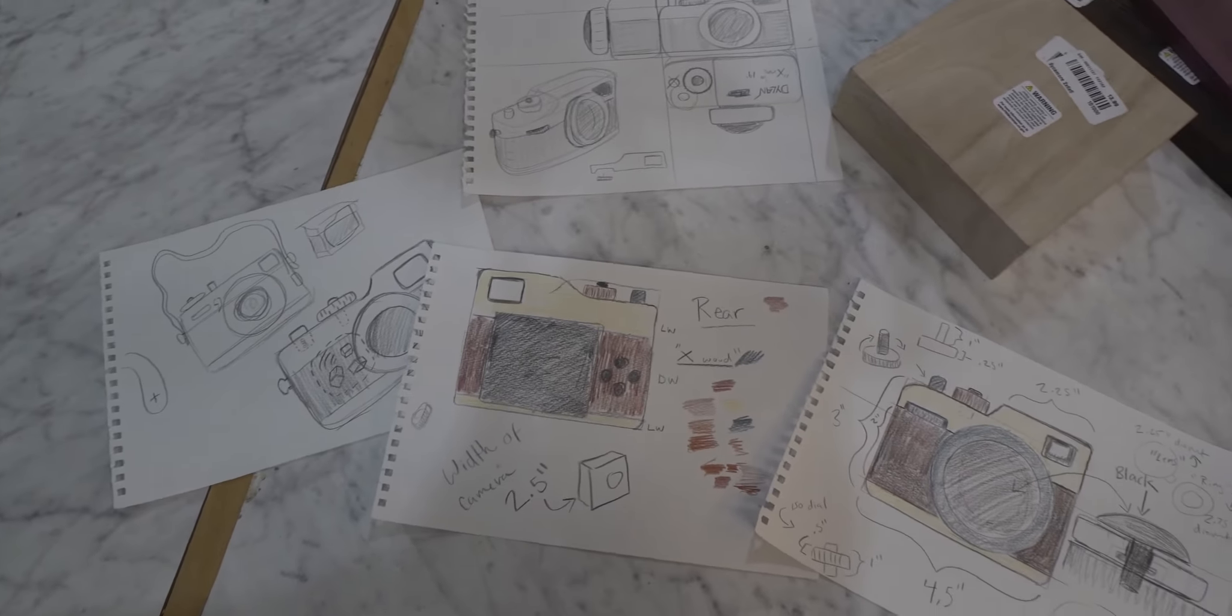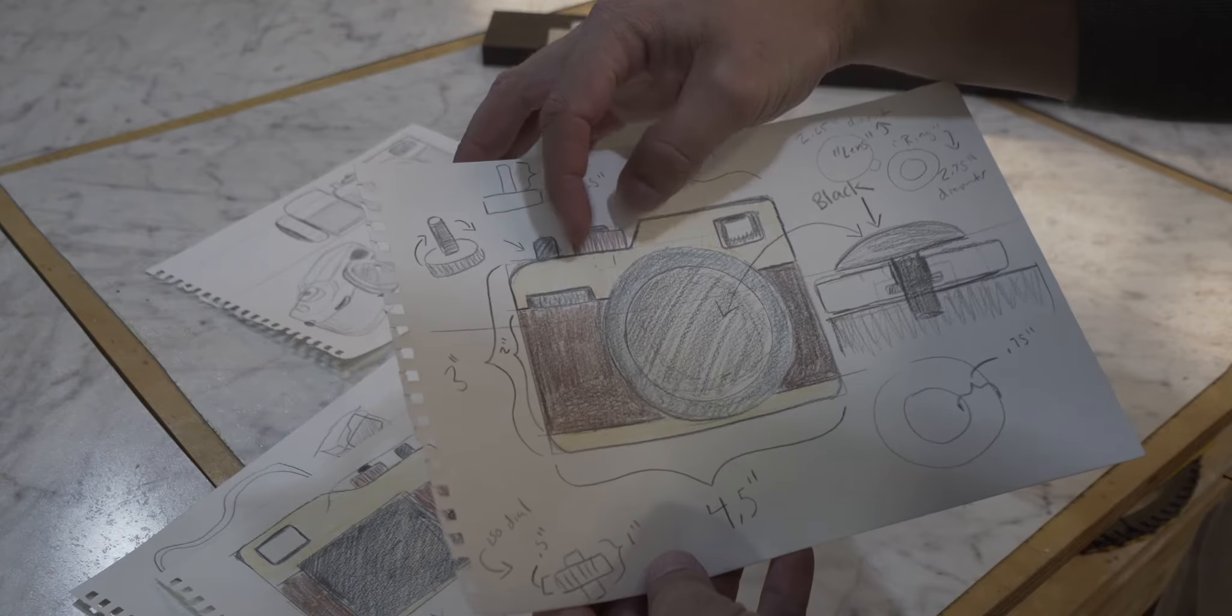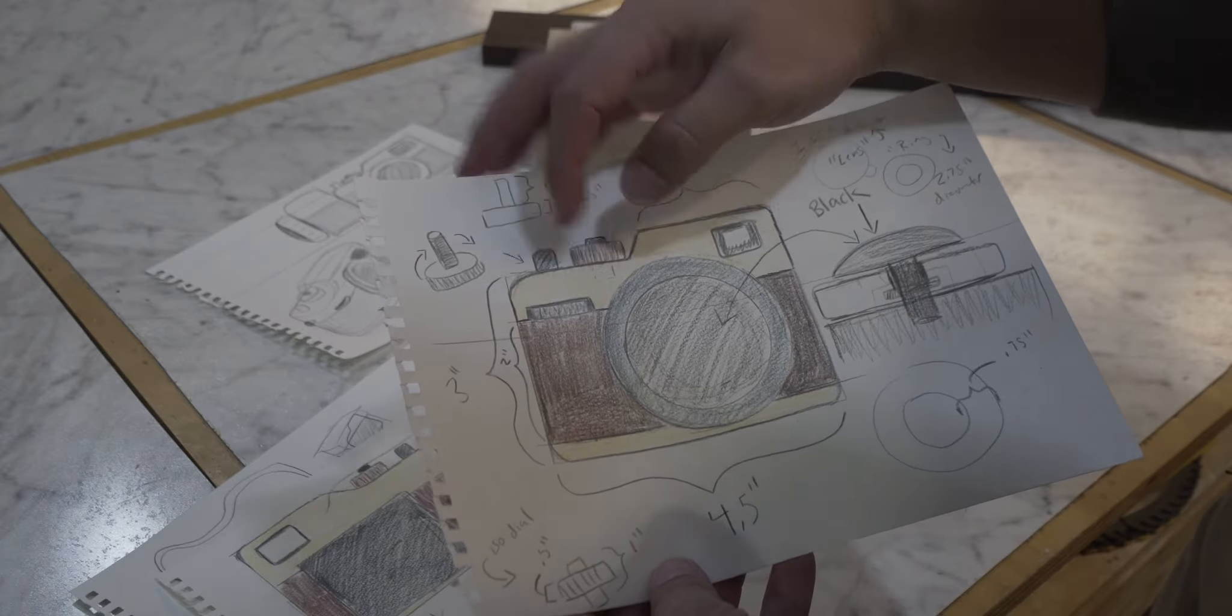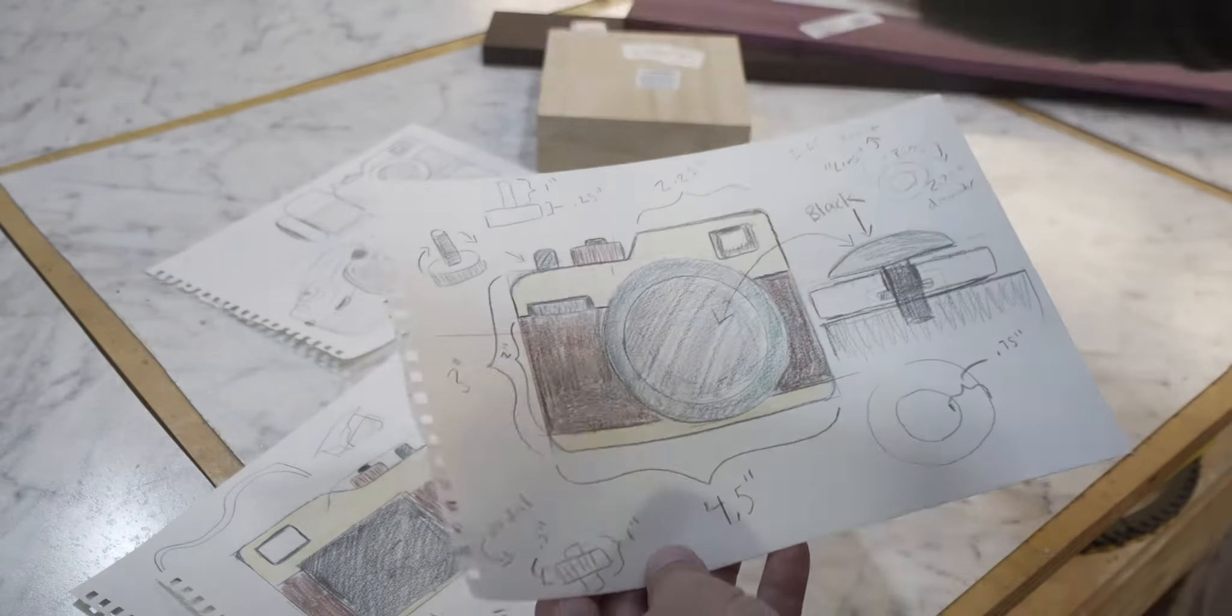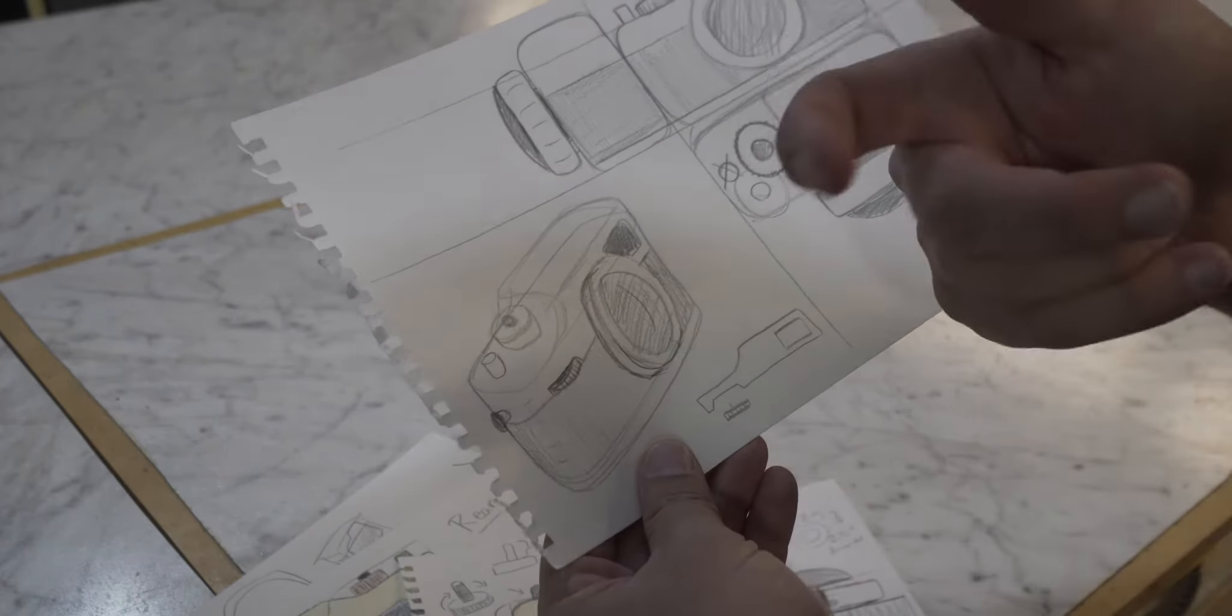I've never done anything like this before so it'll be a learning process. Let's go look at the designs. We're going to have a rotating aperture ring, a dial on the top that will move, and then also on the front of the camera I want there to be something that actually rotates that'll kind of jet out of the front, very much like the x100 series.